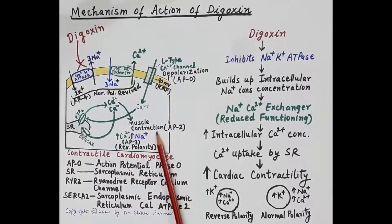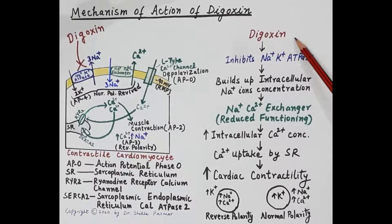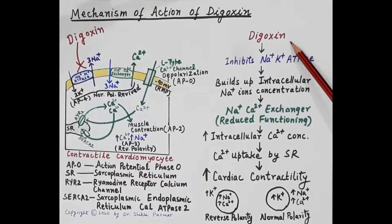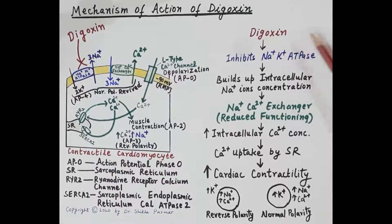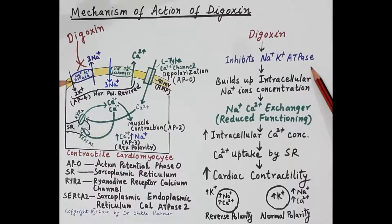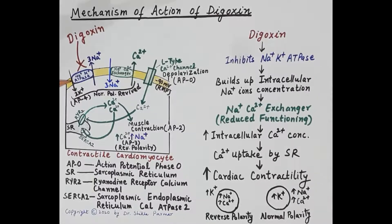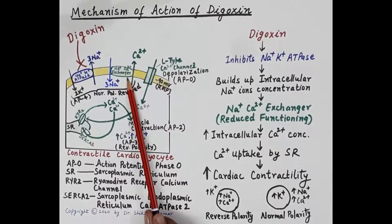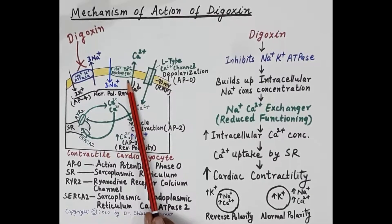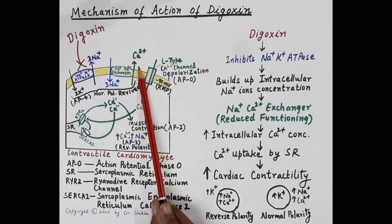This is how a normal contractile cardiomyocyte contracts. Digoxin is a cardiotonic that increases the force of contraction of cardiac muscles and is used in management of congestive heart failure. Digoxin acts as an inotropic agent by inhibiting the sodium-potassium ATPase pump. Because of this inhibition, sodium ions are not expelled from the cell, resulting in an increase in intracellular sodium concentration. This also causes reduced functioning of the sodium-calcium exchanger.